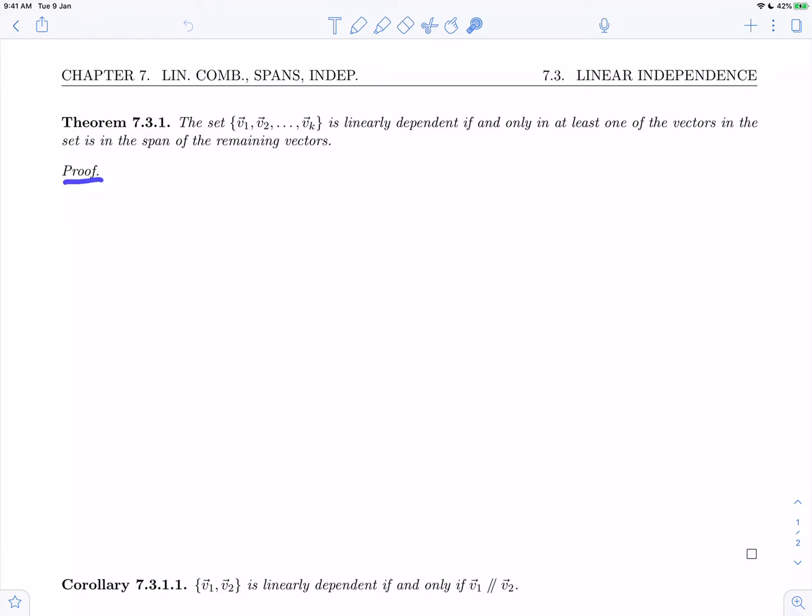So let's go ahead and prove this. This is an if and only if proof which means we need to do proofs in two directions. So we're going to start by assuming that the set that we're given v1, v2 through to vk is linearly dependent.